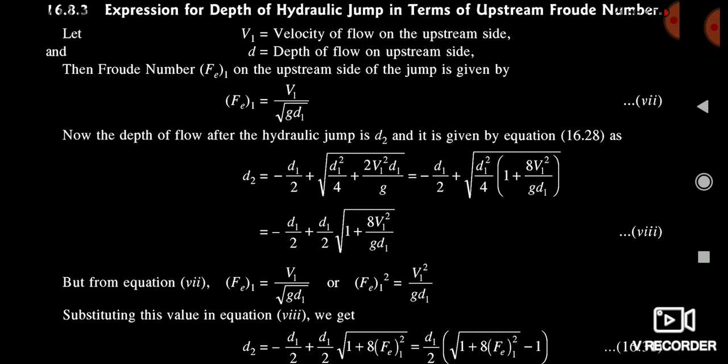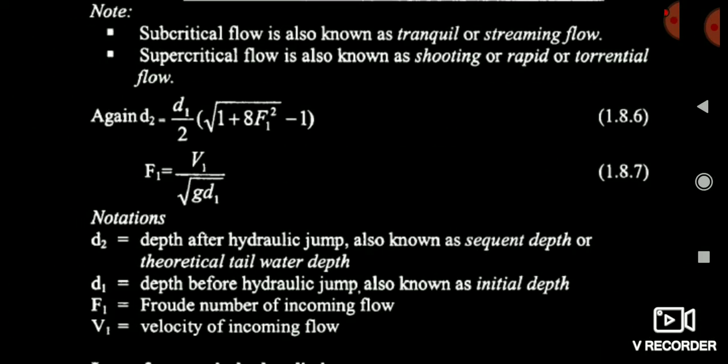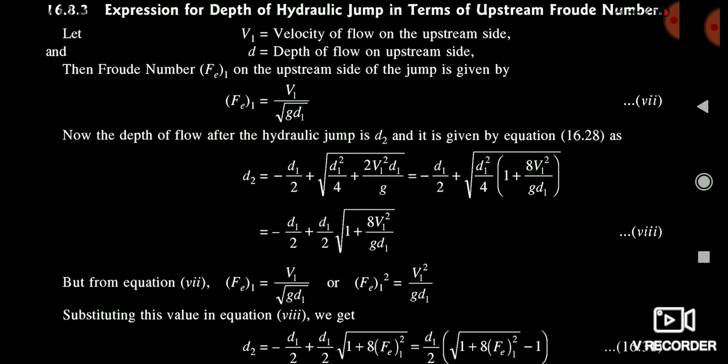Before seeing the derivation, first understand what is the Froude number. The Froude number is nothing but simply the ratio of velocity divided by root under gd. The Froude number will decide whether the flow is supercritical or subcritical. When the Froude number is greater than 1, the flow is supercritical. When the Froude number is less than 1, the flow is subcritical. So here F₁ = V1 / √(g·d1).